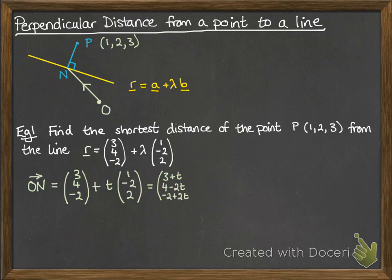Put those together, so we have the vector for ON in terms of T. Right, next we want to think about the vector NP, because that's the actual one we want to work out and work out its magnitude. So to make NP, we would have to do OP minus ON, just using normal vector laws there.